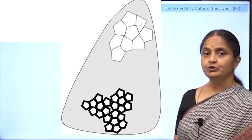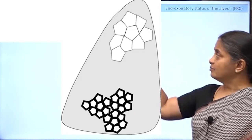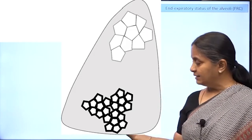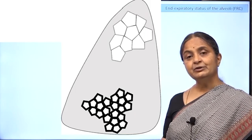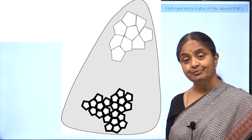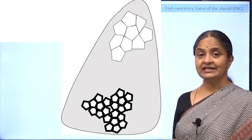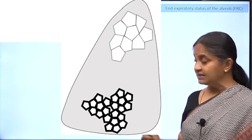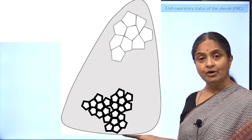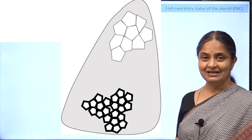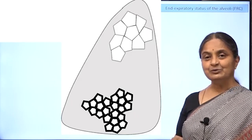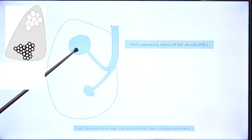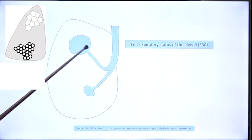The logical conclusion would be that there is more air in the apices of the lung and more blood in the base of the lung. Can we extrapolate this to ventilation and perfusion? Can we say that ventilation is more in the apices and perfusion is more in the base? That would be an incorrect statement, and we shall see why. This is an interpretation of what we have seen at the end of normal expiration.